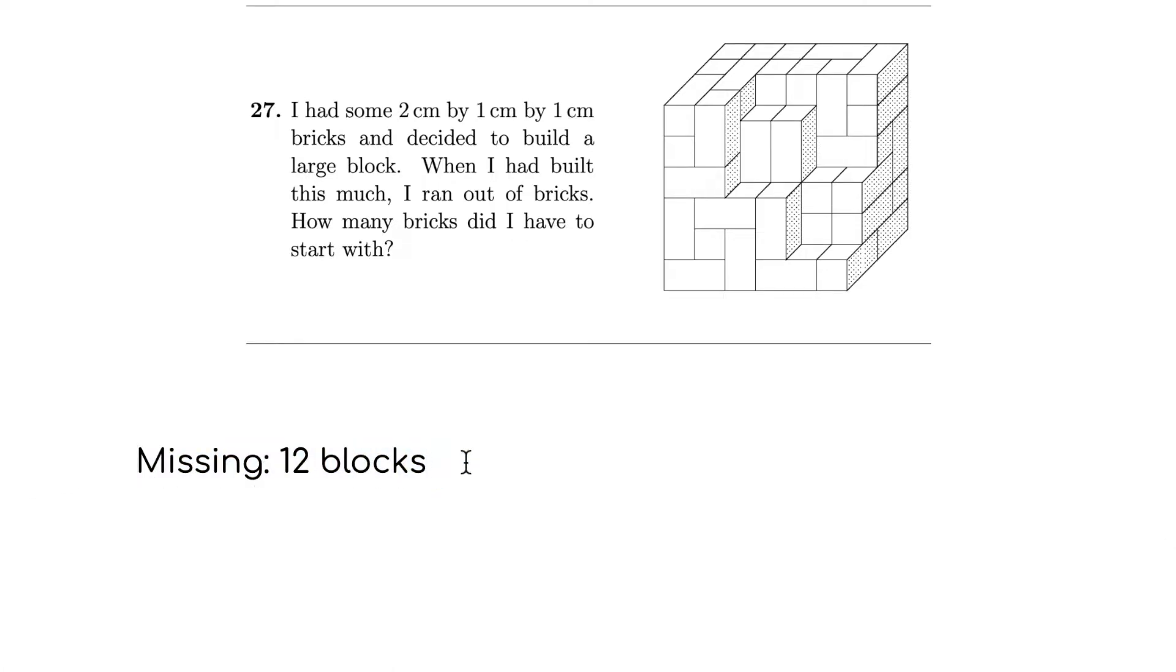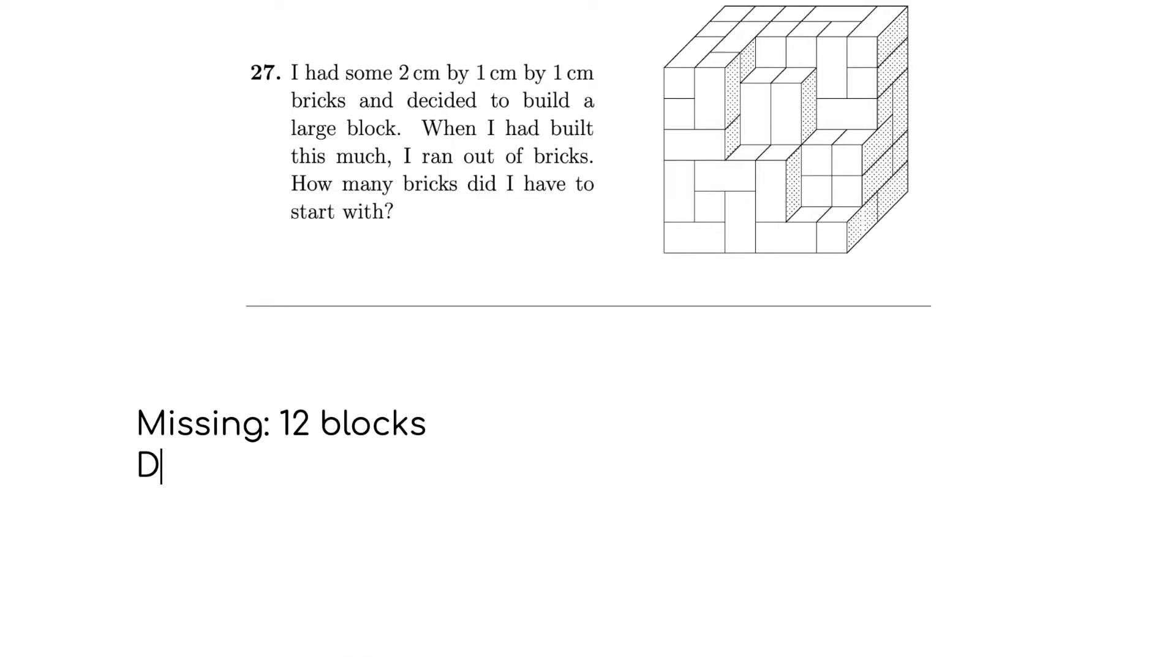So that means we need 12 more blocks. So we're missing 12 blocks. It might be a bit hard to count. Don't worry if you didn't follow that. There's no better way to do it. So now we look at the block size. Across the length we have one, two, three, four, five, six centimeters is the length. And the width is one, two, three, four centimeters. And then the height is one, two, three, four, five, six centimeters. So that means the dimensions of the block are six times six times four. So that equals, let's see. Six times six is 36 times four. That would be 144 centimeters cubed.